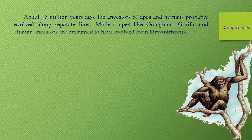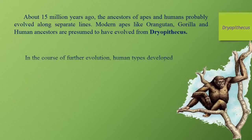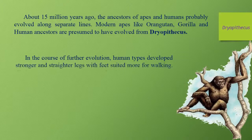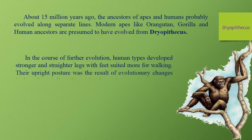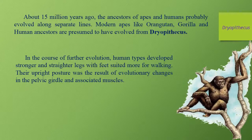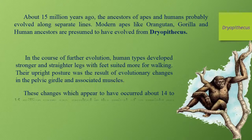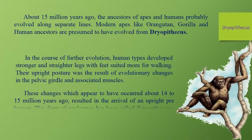Modern apes like orangutan, gorilla, and human ancestors are presumed to have evolved from Dryopithecus. In the course of further evolution, human types developed stronger and straighter legs with feet suited more for walking. Their upright posture was the result of evolutionary changes in the pelvic girdle and associated muscles. These changes, which appear to have occurred about 14 to 15 million years ago, resulted in the arrival of an upright pre-human called Zinjanthropus.